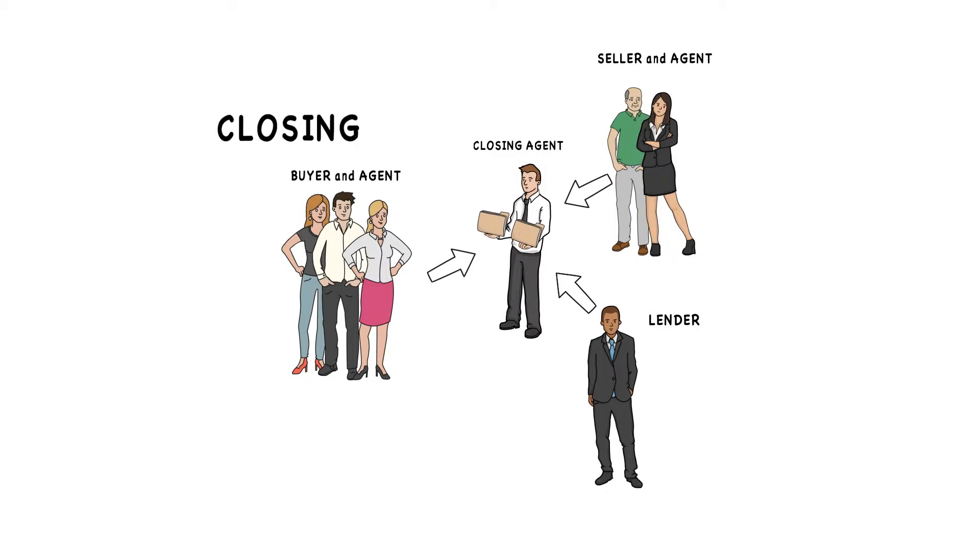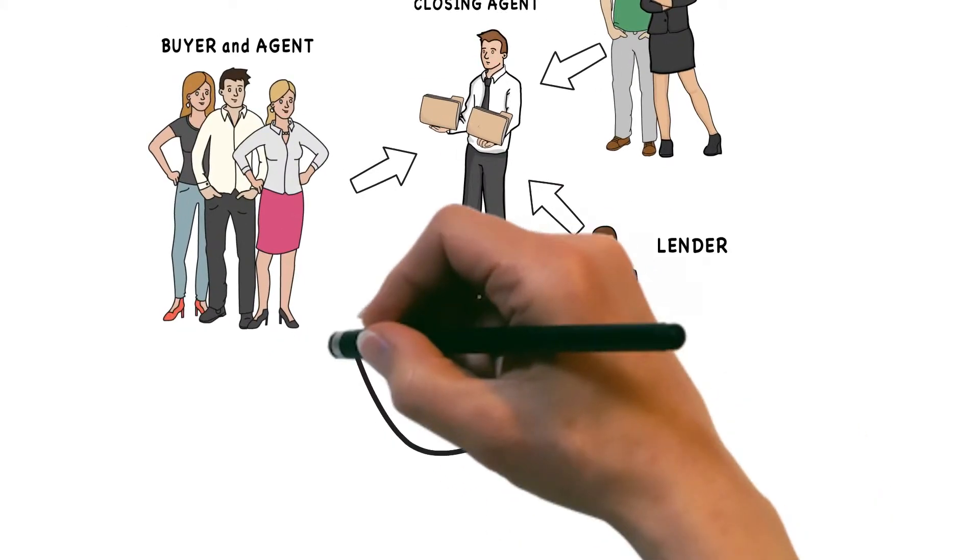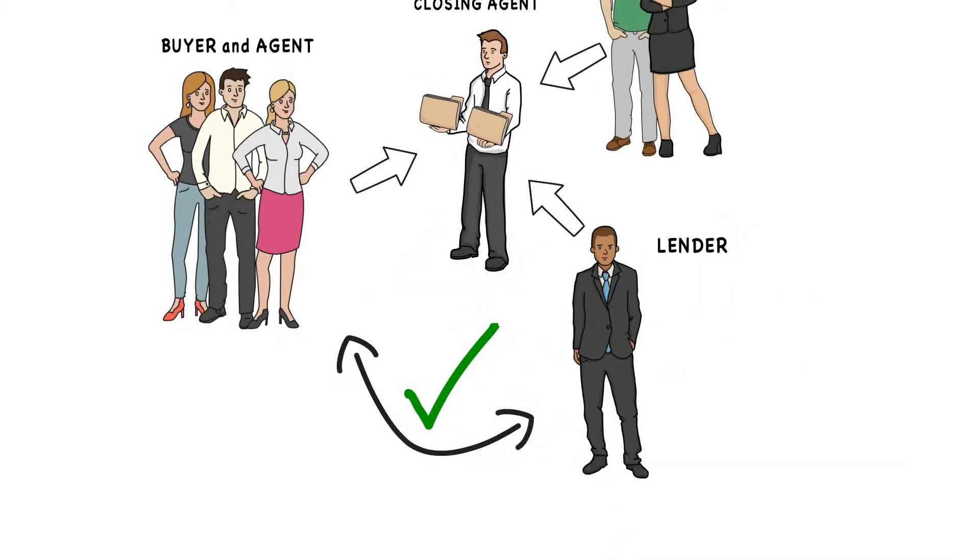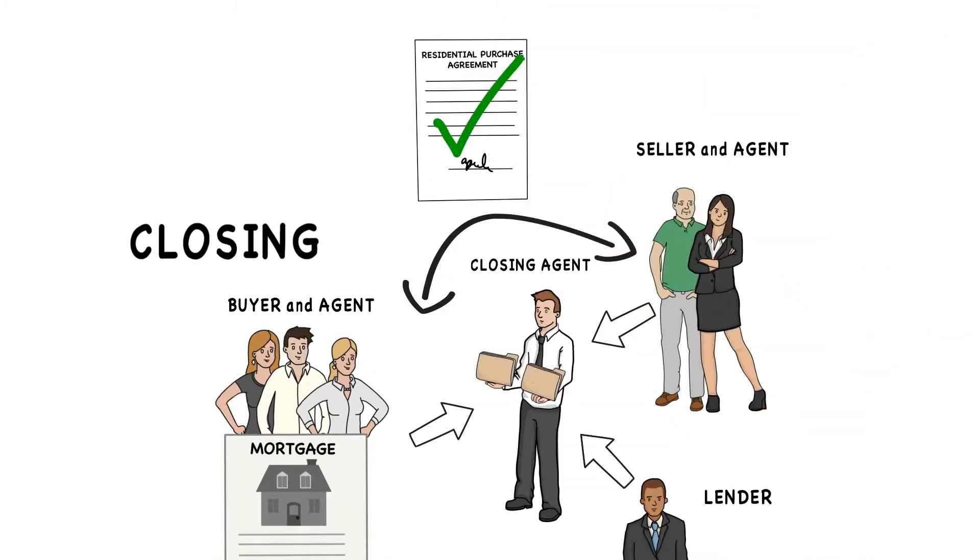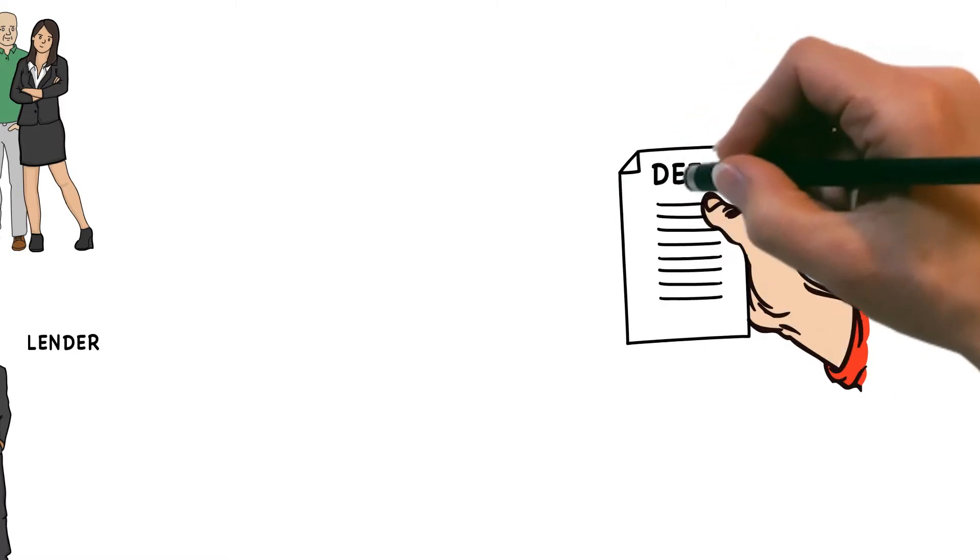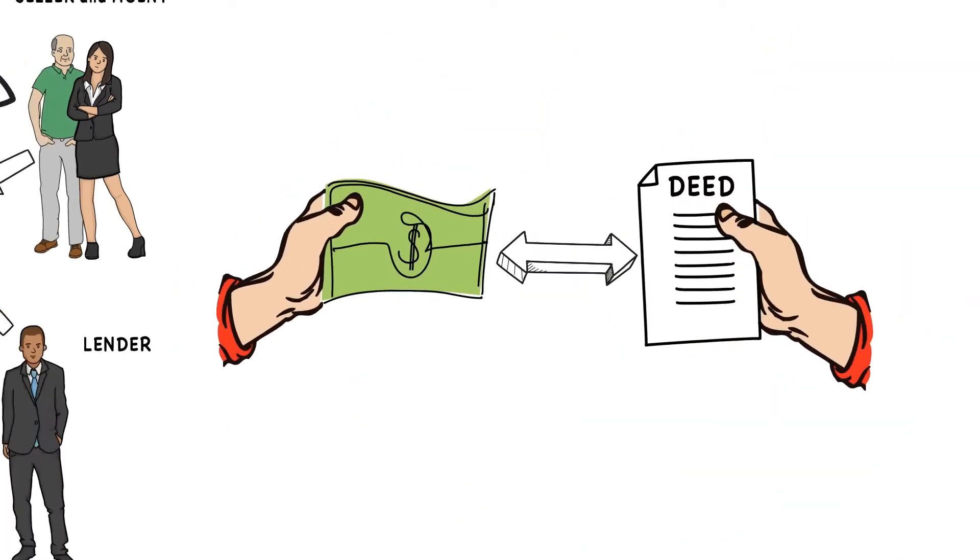Several things happen at the closing. Terms of the agreement between you and your mortgage lender are confirmed. Your loan goes into effect and you receive your mortgage. What you and the seller agree to in the sales contract is confirmed. Ownership of the home is transferred and funds are transferred.